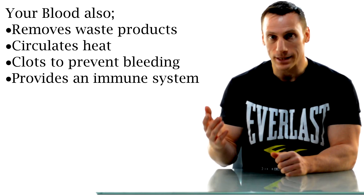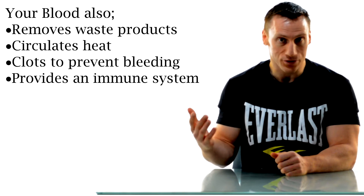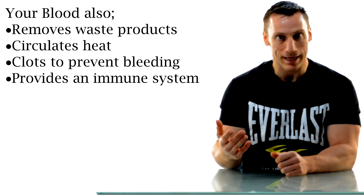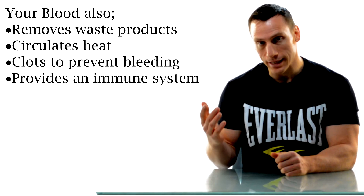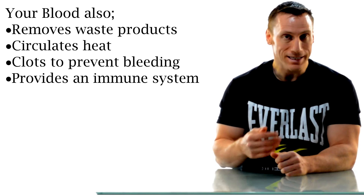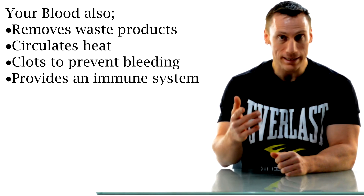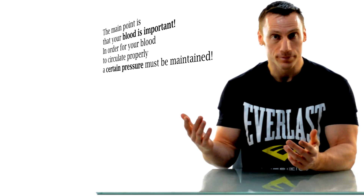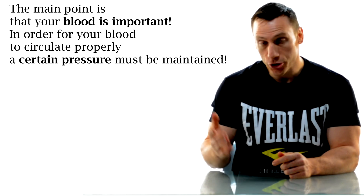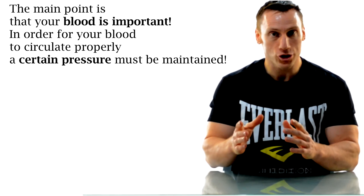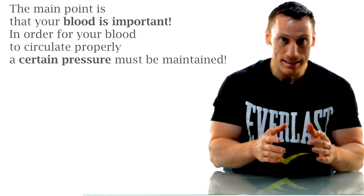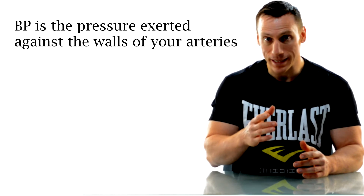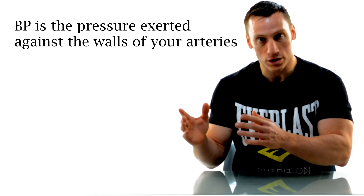Your blood also performs a host of other functions, such as removing waste products like CO2 and lactic acid. It circulates heat, has the ability to clot to stop you from bleeding to death, and provides your body with an immune system. Now in order for your blood to circulate effectively, a certain pressure must be maintained within the system. When we measure your blood pressure, what we're actually measuring is the pressure exerted against the walls of your arteries.